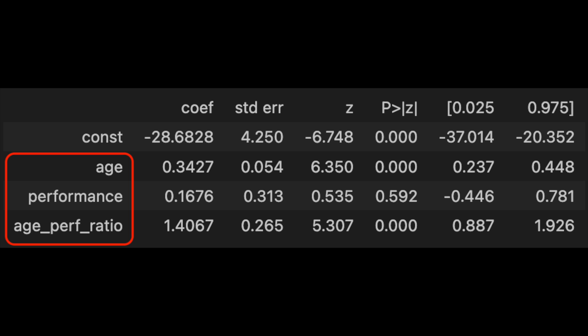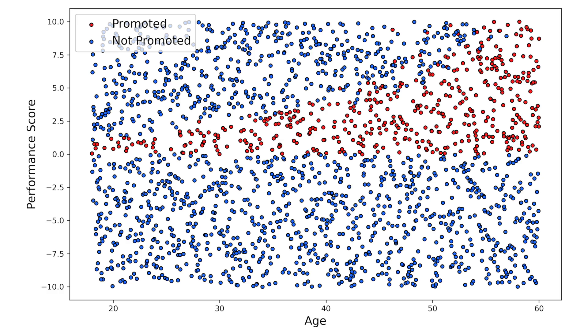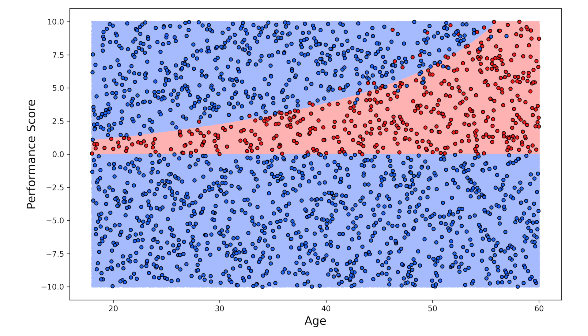Notice we now have three features. This model achieved an accuracy of 99%. Looking at the summary, we can see that all three features have a positive coefficient. As age and performance increase, the employee is more likely to get promoted. Yet the ratio must also be large for a promotion to be likely — in other words, the employee's age must be high relative to their performance. These relationships are all consistent with what we discussed and saw in the first scatter plot, and will hopefully also be consistent with HR's intuition. The third feature is still a function of age and performance, so we can visualize the model's decision boundary in the same way as before. By adding the additional feature, logistic regression can model a non-linear decision boundary — technically a non-linear function of age and performance, but still a linear function of all three features.